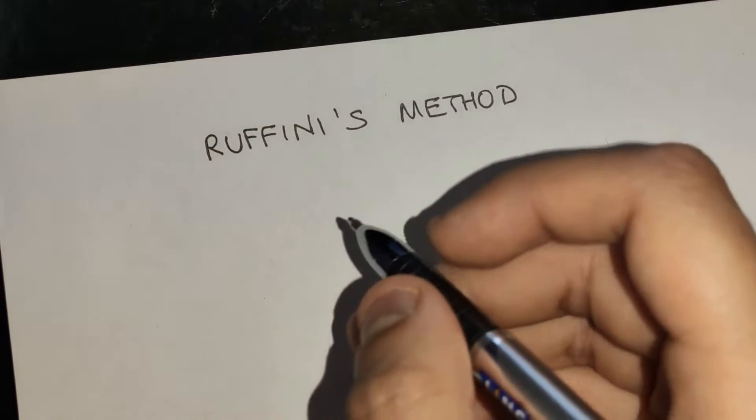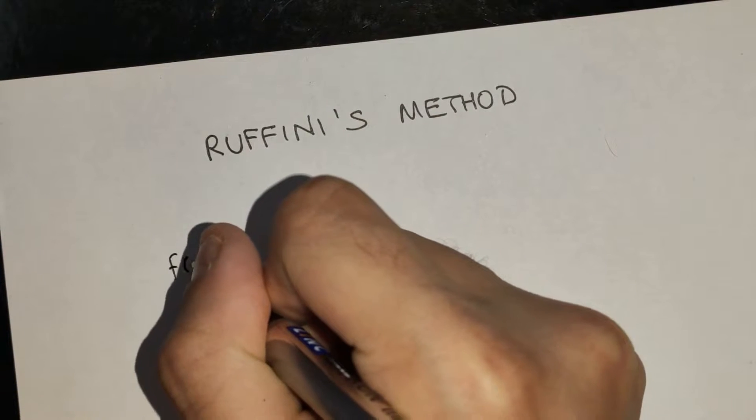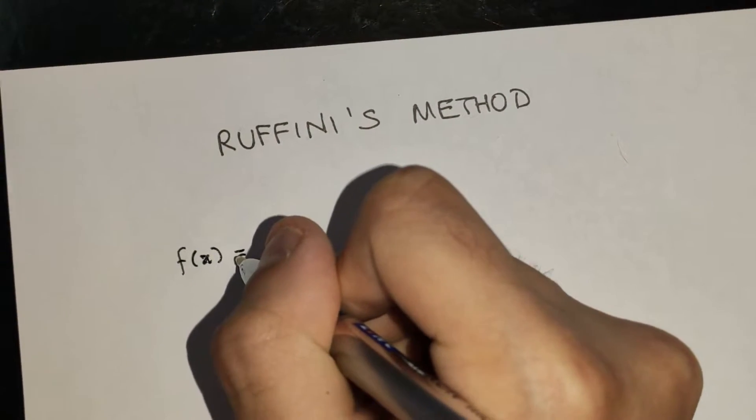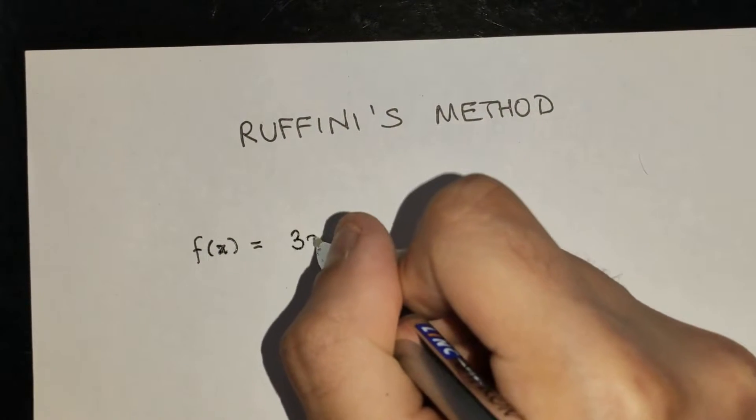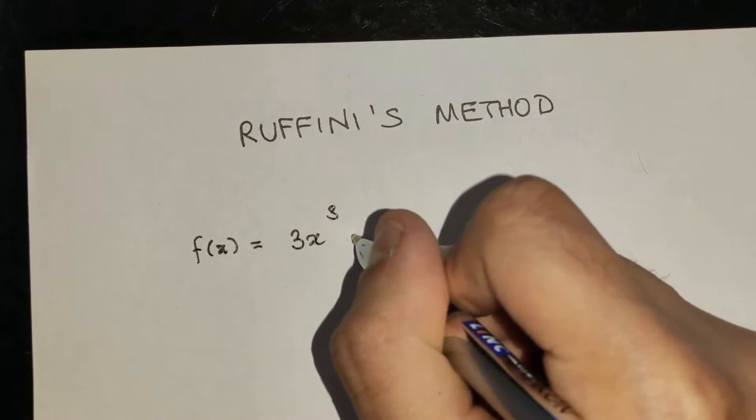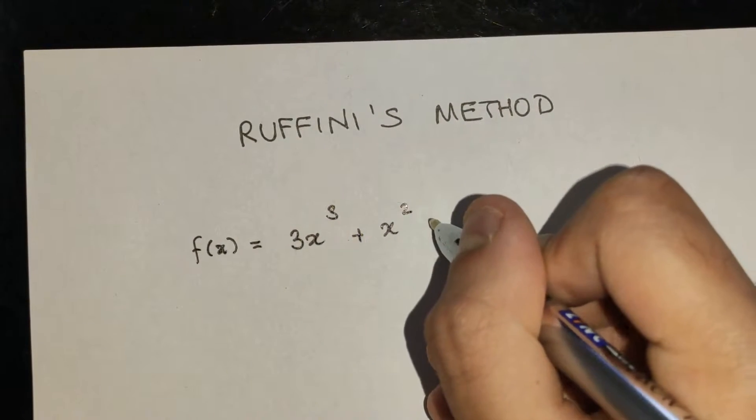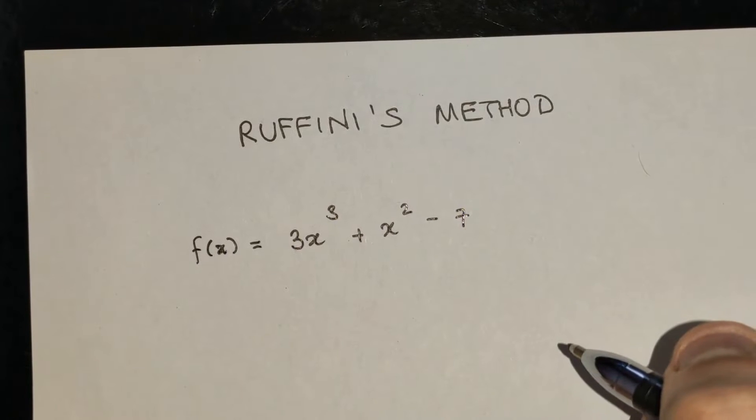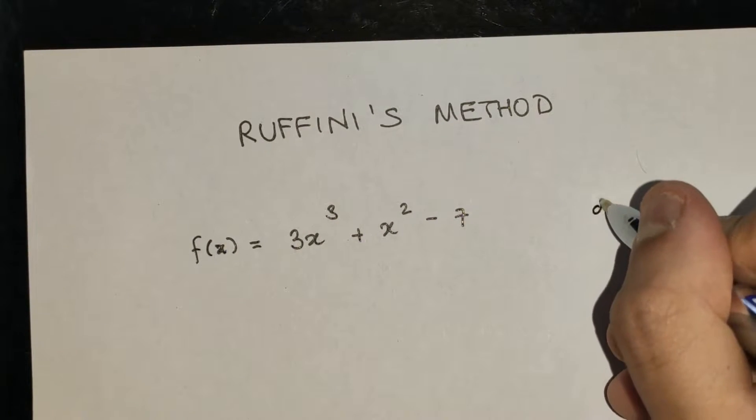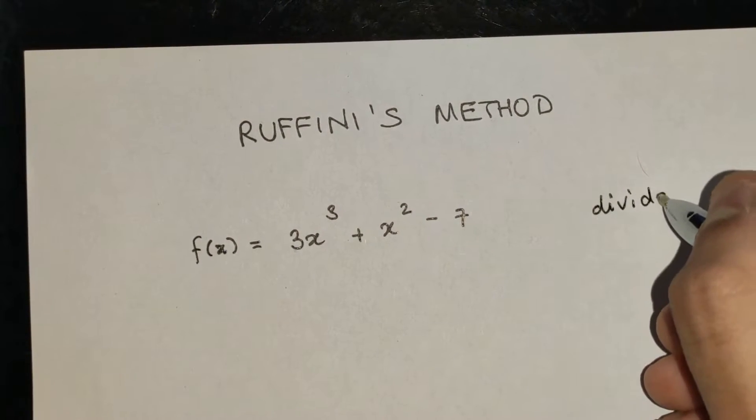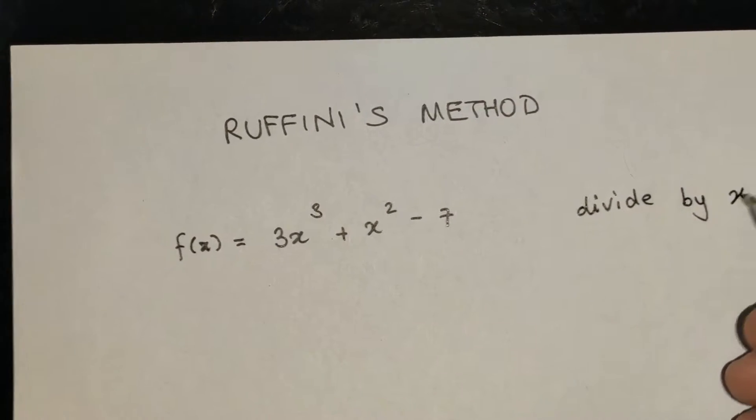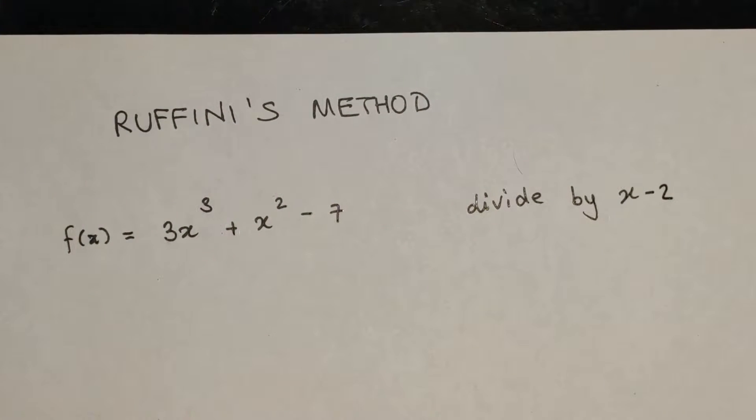In this example, I'll be using f equals 3x cubed plus x squared minus 7, and I'll say divide by x plus 2.